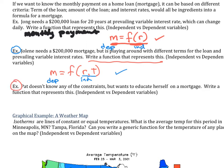If we do the next example, Pat doesn't know any of the constraints, but wants to educate herself on a mortgage. Write a function that represents this. Well, now this is going to be rate, term, and principle. And so now you have a function of three variables.